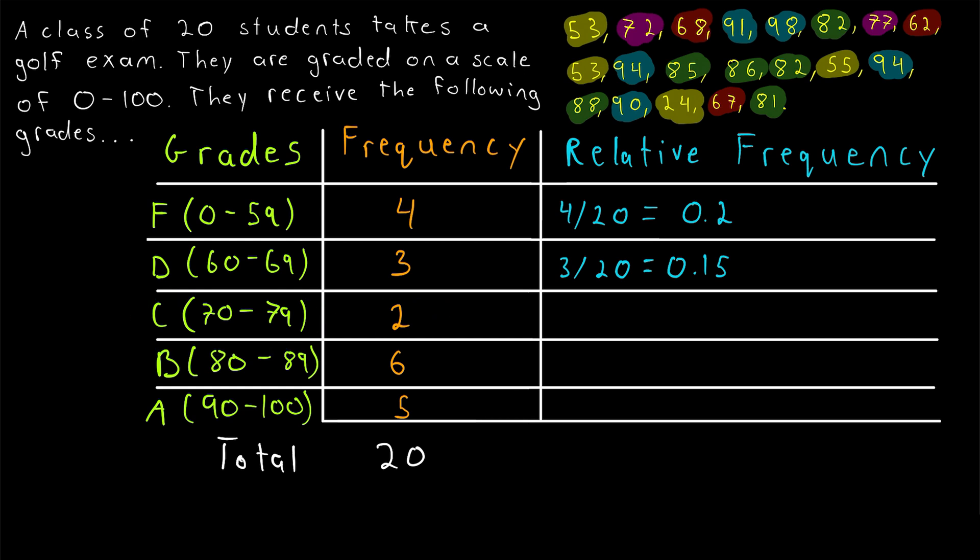Now the C's. There were two C's. So the relative frequency is 2 divided by 20. That's 0.1. For the B's. There was a frequency of 6. 6 B's. So 6 relative to the total number of grades, 20. That's going to give us 0.3. And then lastly we have 5. That's the frequency of the A's. So that frequency 5 relative to the total number of grades. 5 divided by 20. That is 0.25.